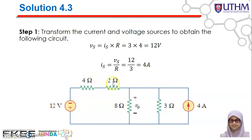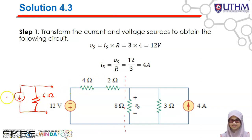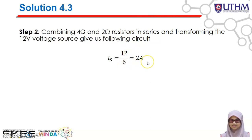Next, the 4-ohm and 2-ohm resistors are connected in series, so you add them: 4 + 2 = 6 ohms. So you have 6 ohms connected in series with the 12-volt voltage supply. You can then transform this voltage supply back into a current source with the arrow pointing upward (toward positive terminal) connected in parallel with a 6-ohm resistor. The new Is = 12 ÷ 6 = 2 amperes.